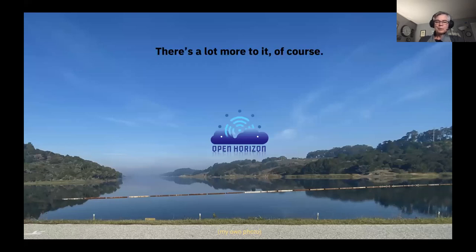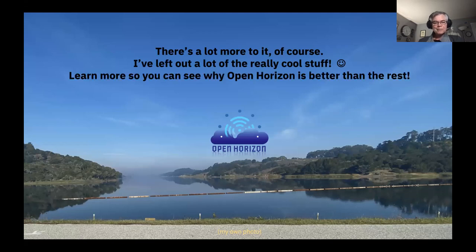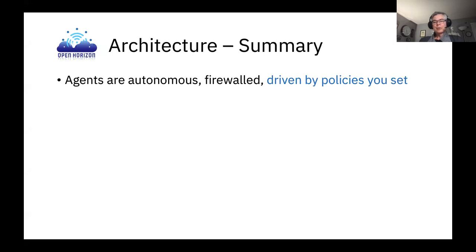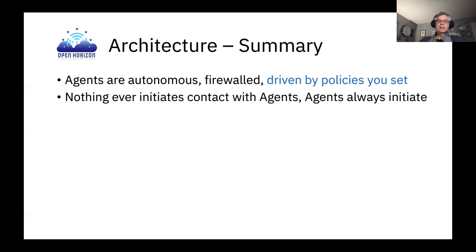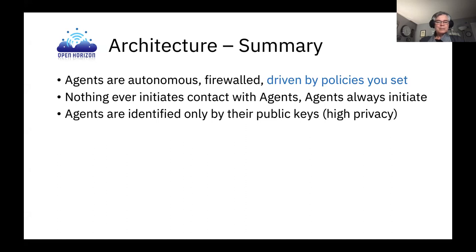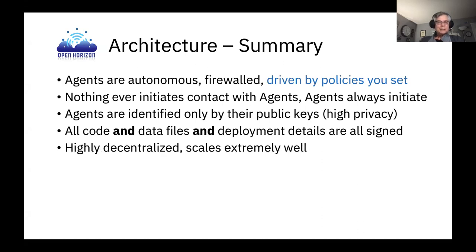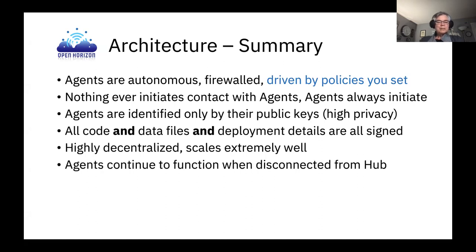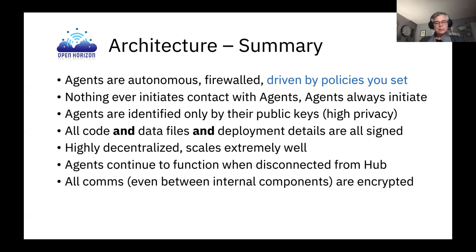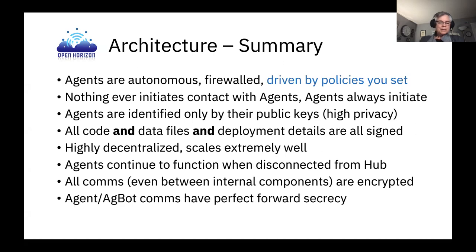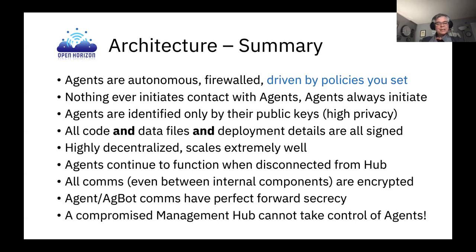There's a lot more to Open Horizon. Here's a quick summary: agents are autonomous, firewalled, and driven by policies that you set. Nothing ever initiates contact with agents — agents always reach out to the management hub. Agents are identified only by their public keys, so there's high privacy. All code, all data files, all deployment details are cryptographically signed. It's highly decentralized so it scales extremely well, and agents can continue to function when disconnected from the hub. All communications are encrypted, and agent-Agbot communications have perfect forward secrecy. Even if you compromise the management hub, you cannot take control of the agents because they have the policy on board — if a management hub tells them to do something that violates their policy, they simply won't do it.